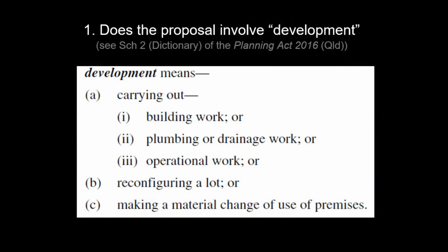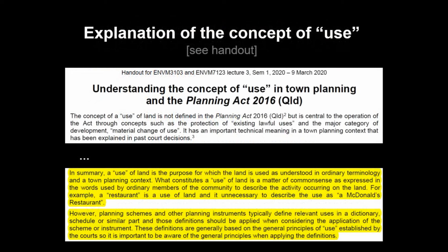The final category, making a material change of use (MCU) of premises, is particularly important. A particular form of MCU is the start of a new use, and the key term 'use' is somewhat poorly defined in the Act. Basically, a use of land is the purpose for which the land is used, as understood in ordinary terminology and a town planning context, and there are often definitions of use in relevant planning schemes and planning regulations. Common uses include a restaurant, a house, a hotel, a school, or a hospital. A material change of use would occur if you wanted to change a house into a restaurant — that would be a new use of the land.